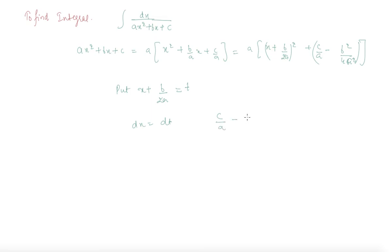Okay, so now put x plus b by 2a as t, so we will get dx as dt. And writing c by a minus b square by 4a square equal plus minus k square, we find the integral reduced to 1 by a times dt over t square plus minus k square. And now depending upon the sign, it can be evaluated by using the previous formulas like dx over x square plus a square, because k square is a constant. So we know the formula for this as directly 1 by a tan inverse x by a.